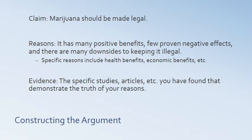Let's look at constructing our argument. Let's say we're going to side with the claim that marijuana should be made legal. That's our overall goal. Our reasons — our basic answer to the research question — is that marijuana has many positive benefits, few proven negative effects, and there are many downsides to keeping it illegal. That is causing us to make the claim that marijuana should be made legal. The evidence we use to support these reasons comes through the specific studies, etc., that you found in your research that can then support these claims.